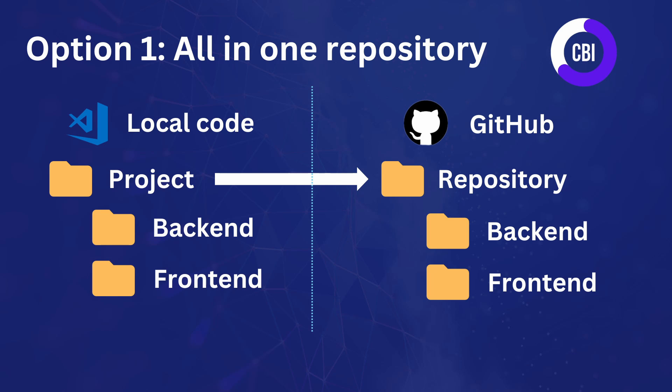The first step is discussing the options for deploying your code to GitHub using Git. There are two main options. The first option is to push your full project to one repository in GitHub, meaning both your backend and frontend code reside in the same repository. If you make changes to your backend, you push changes from both backend and frontend to that same repository every time, and a backend change will automatically trigger a redeploy of both backend and frontend.